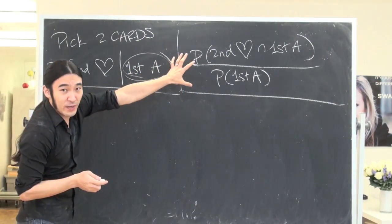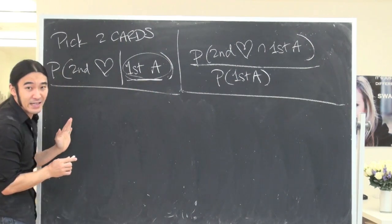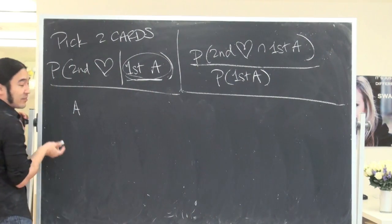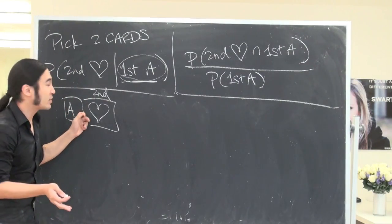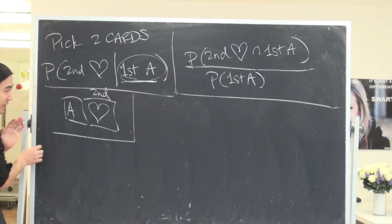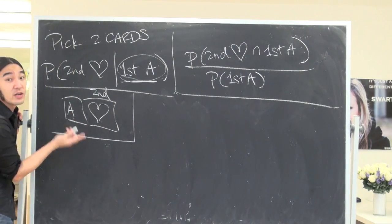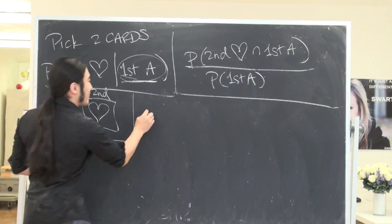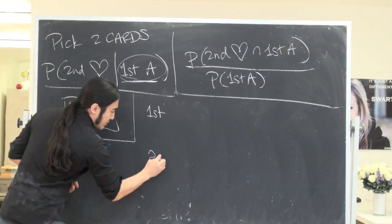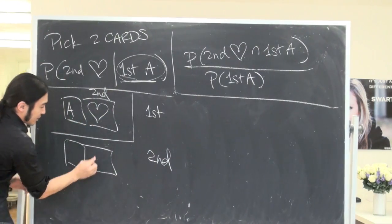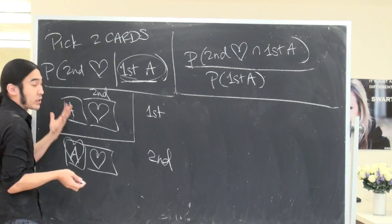Before I do it the brute force way, let's do it the cheaper way first. In the cheaper way, I'm going to assume the first card is already an ace. So you've already been given that the first card is an ace. Now, it kind of depends on whether this ace is a heart or not a heart. So we break it up into two cases. In the first case, this ace is not a heart.